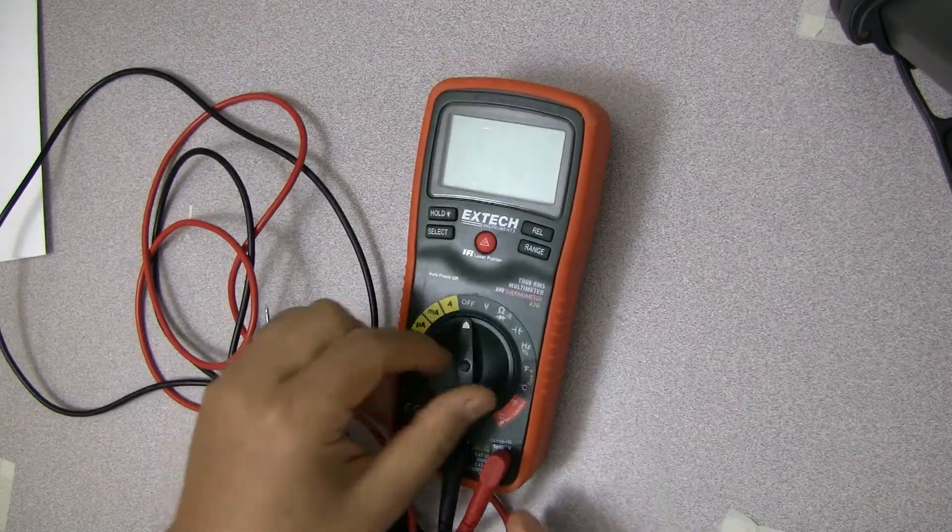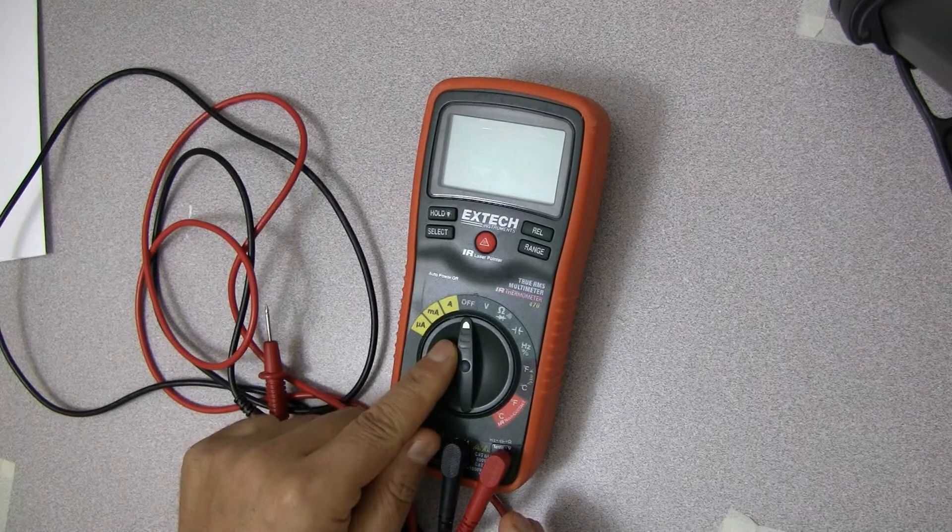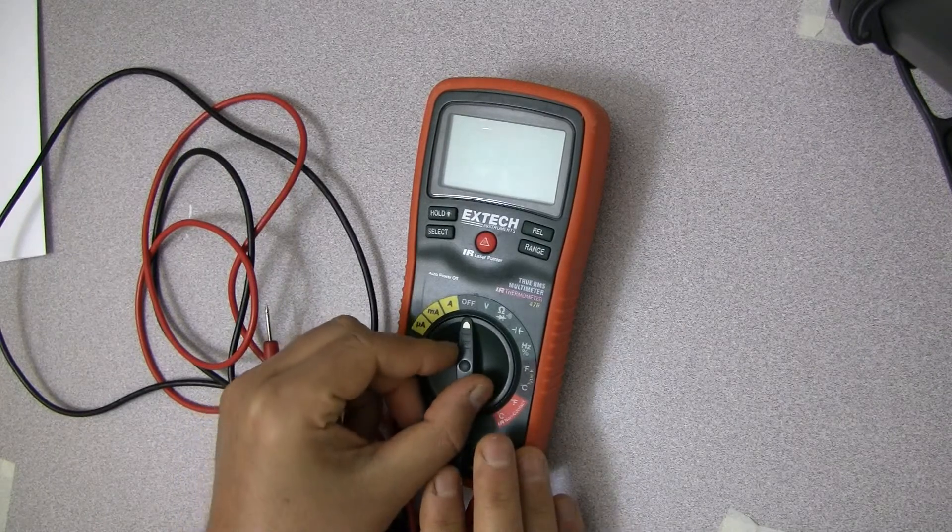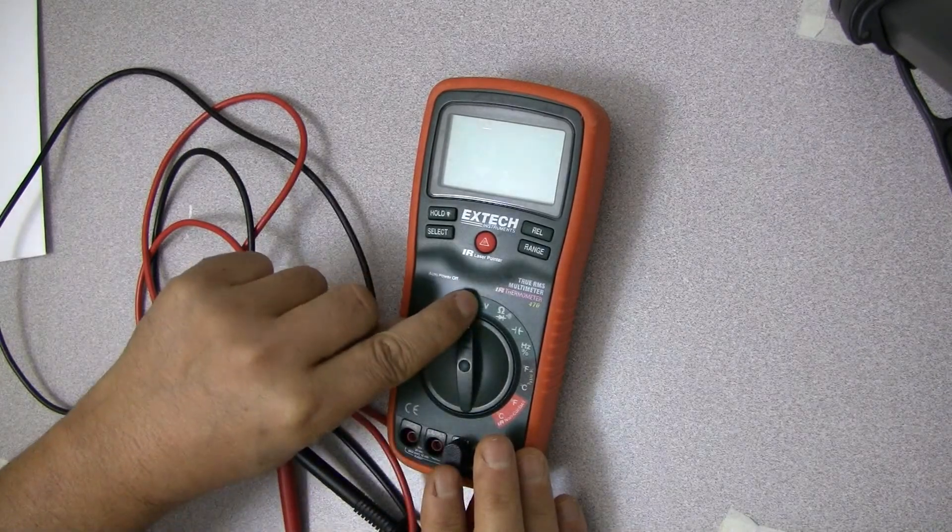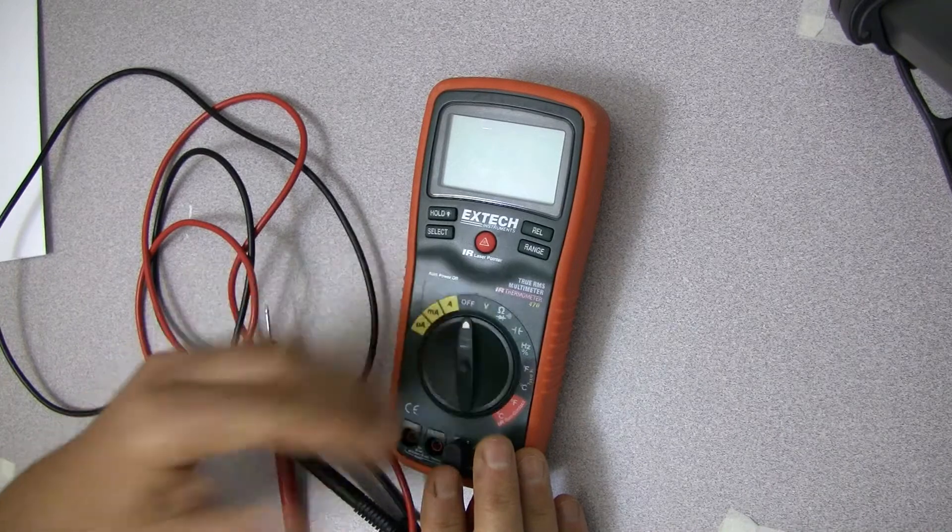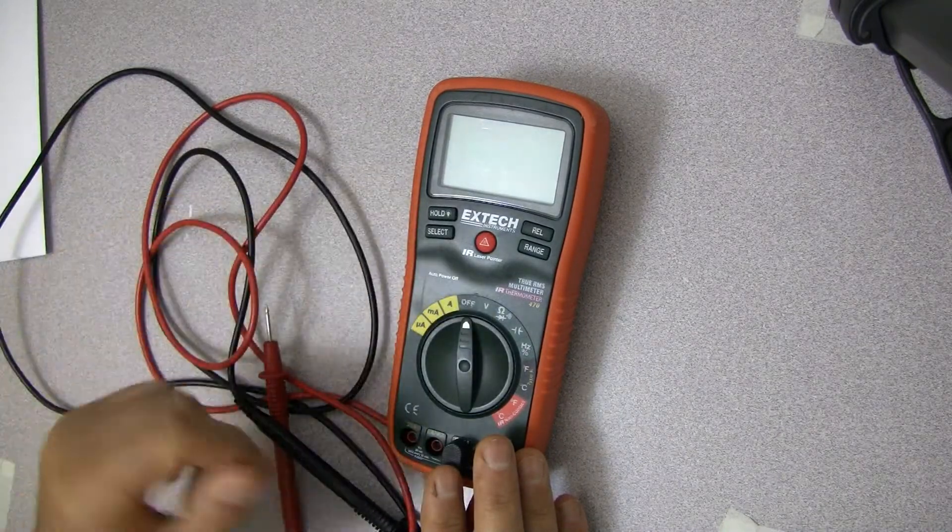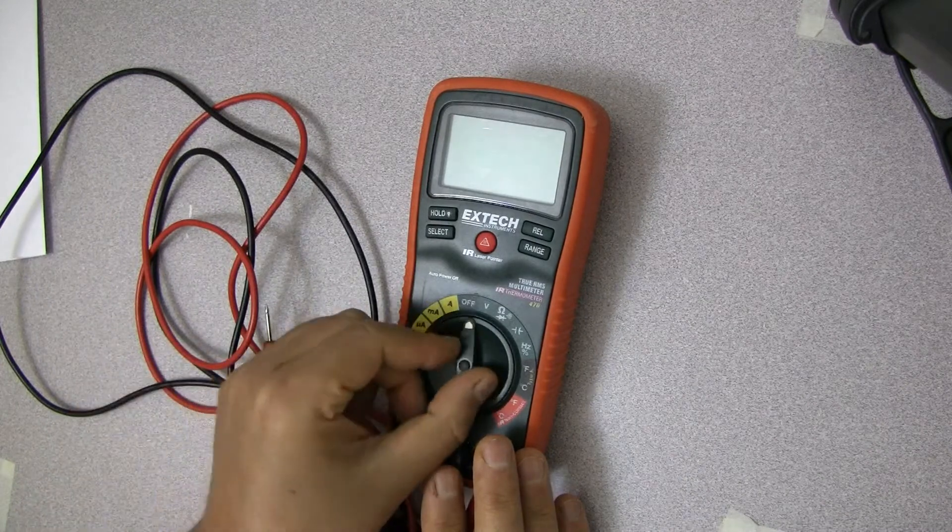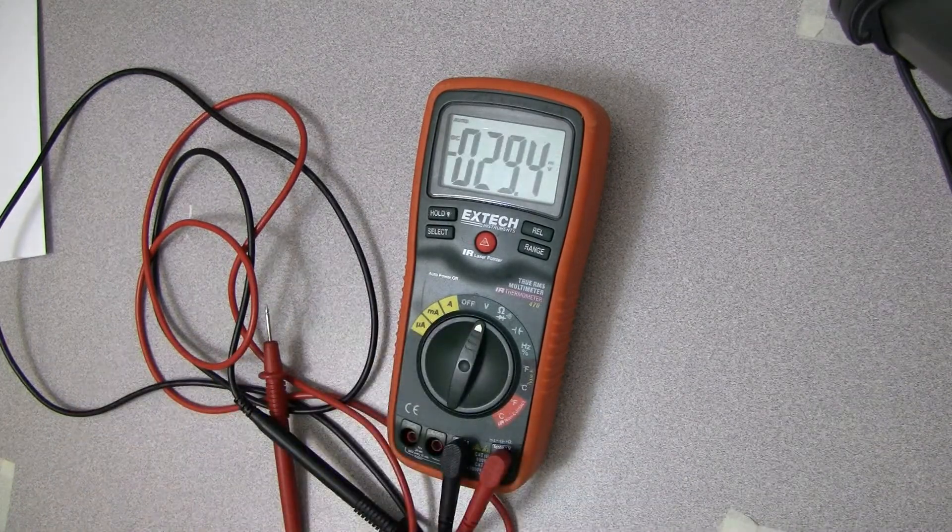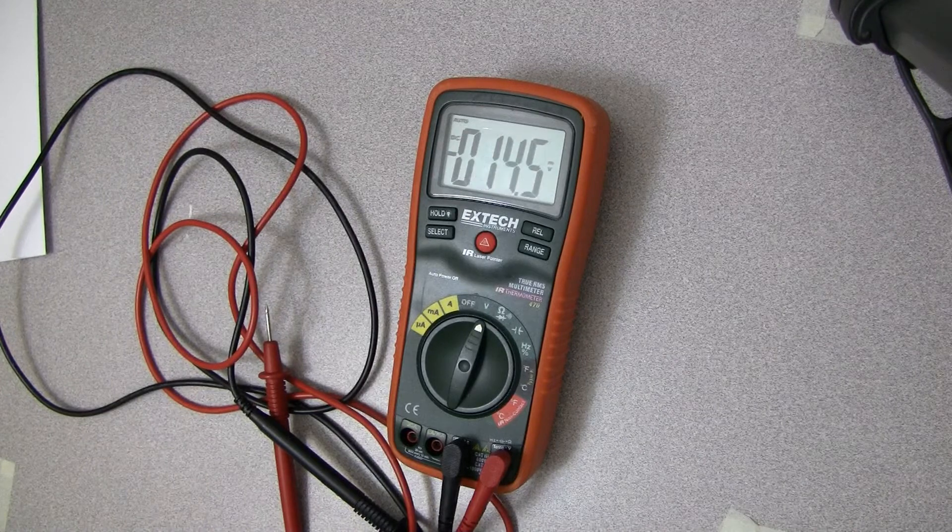For this multimeter, we use a dial to select which function we are going after. If I want voltage, whether it's AC or DC, this one doesn't distinguish it. Some of them will distinguish. You need to know whether you're measuring AC or DC voltage and dial into the right one. This particular one just automatically chooses. It has advantage and it has disadvantage.